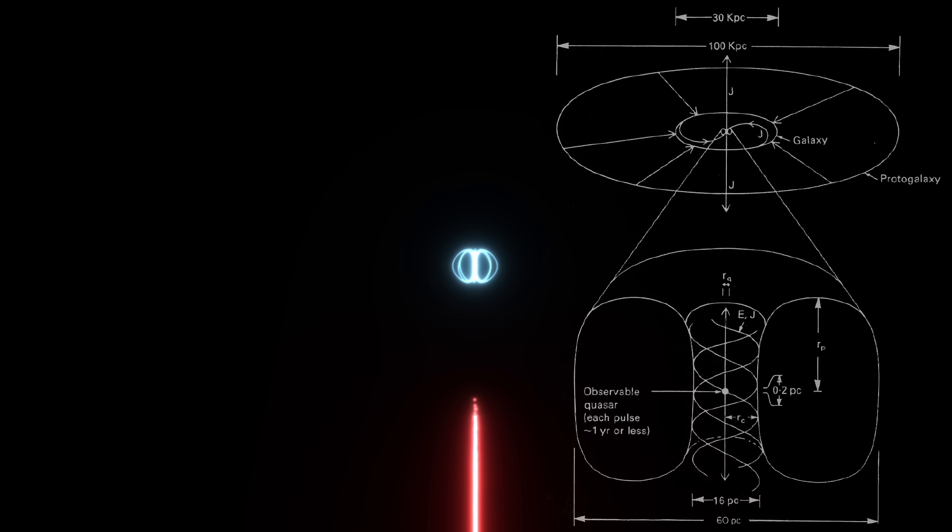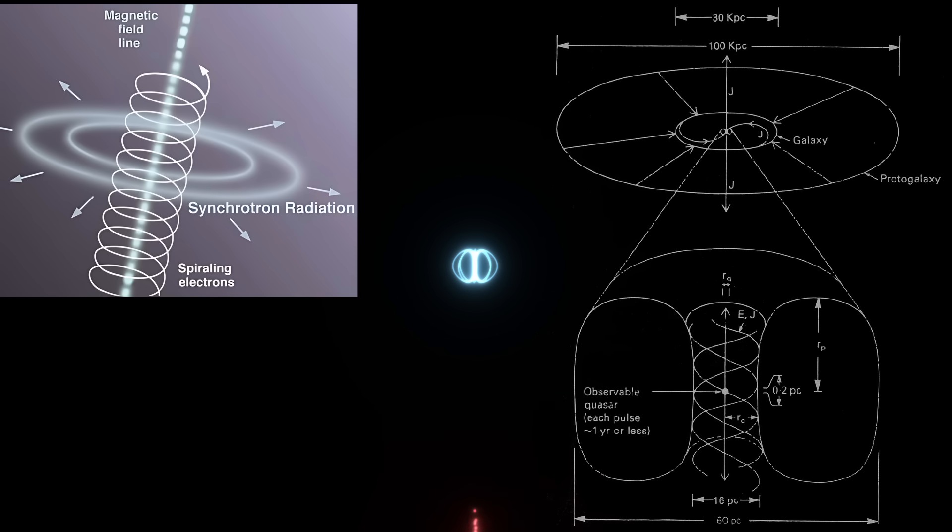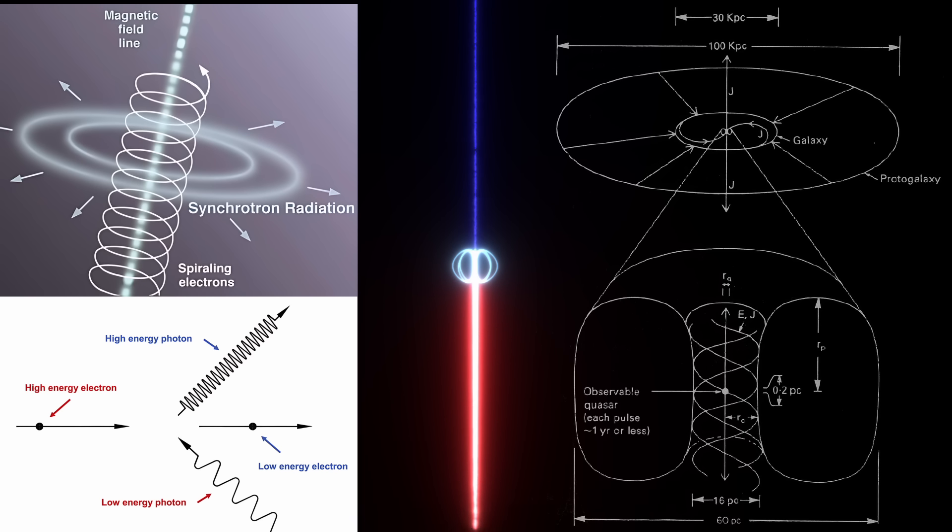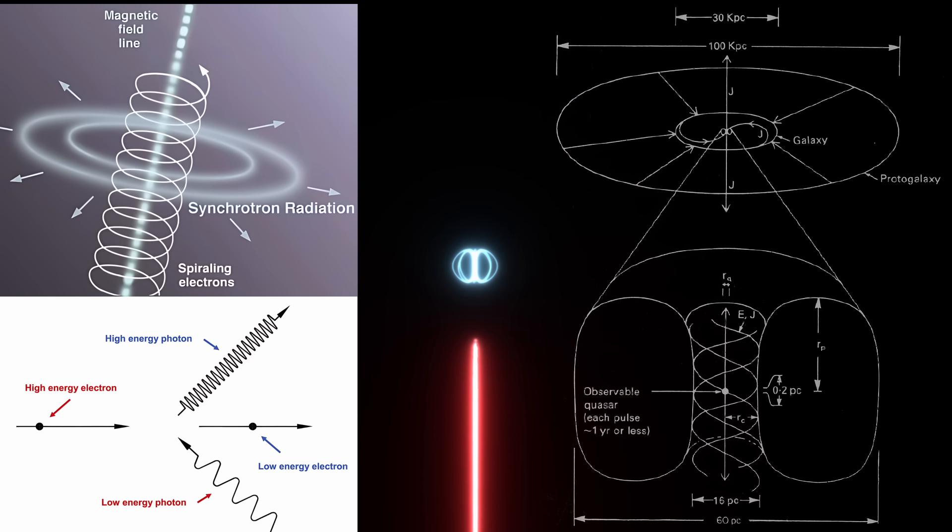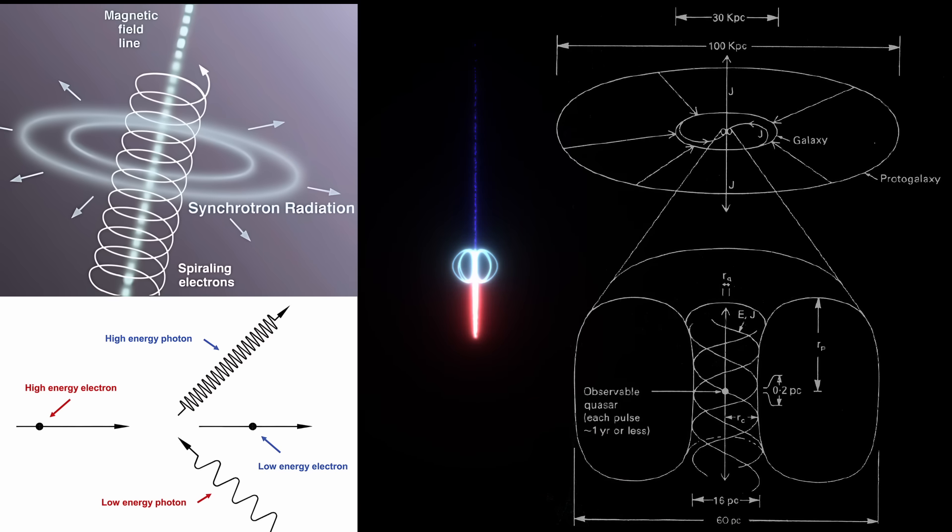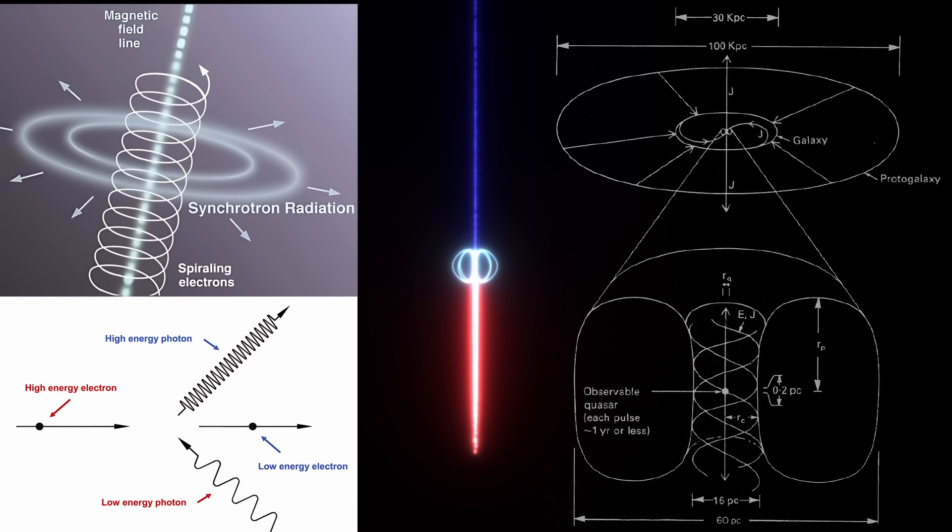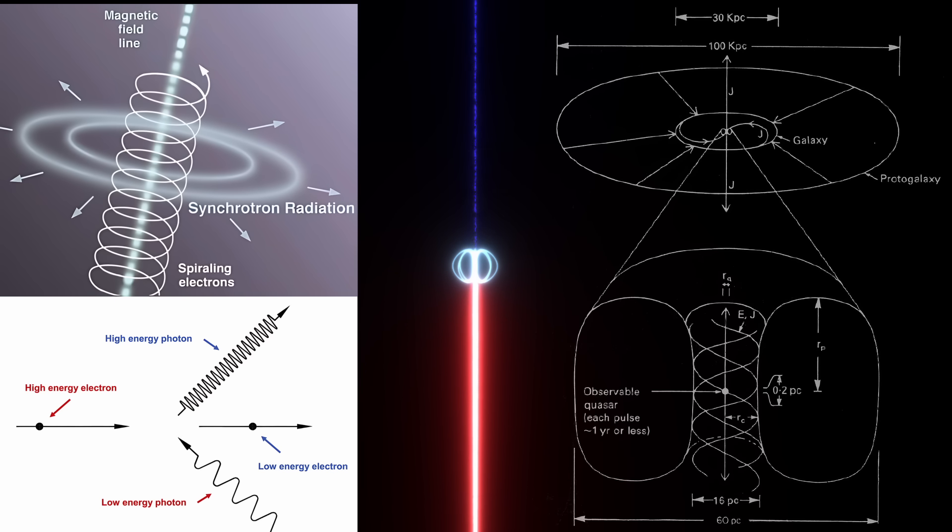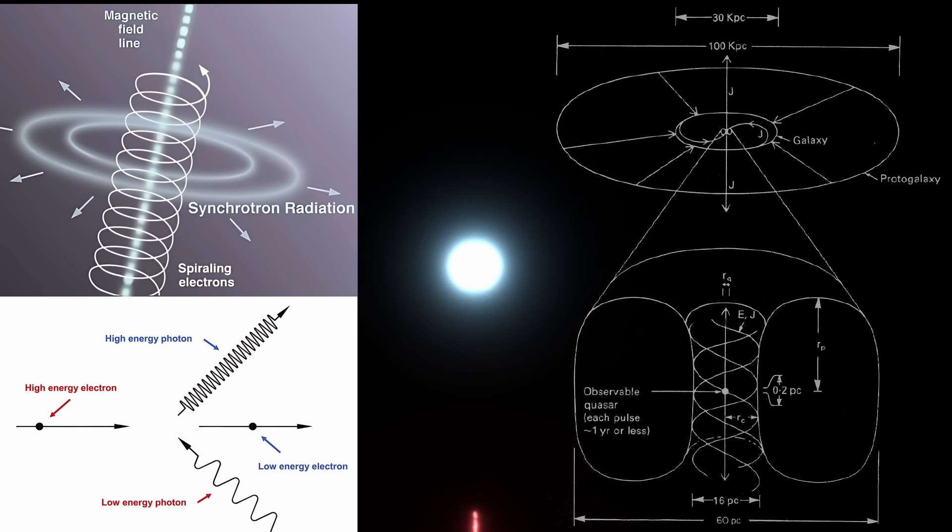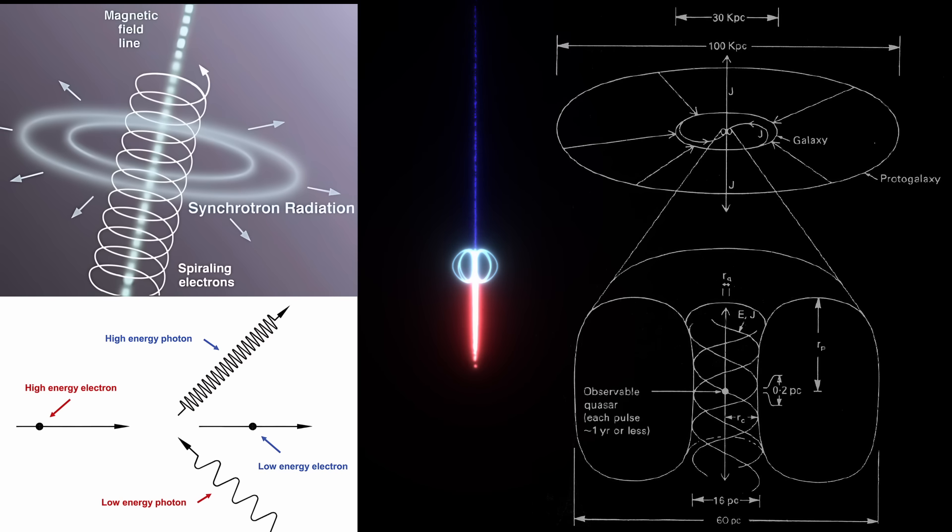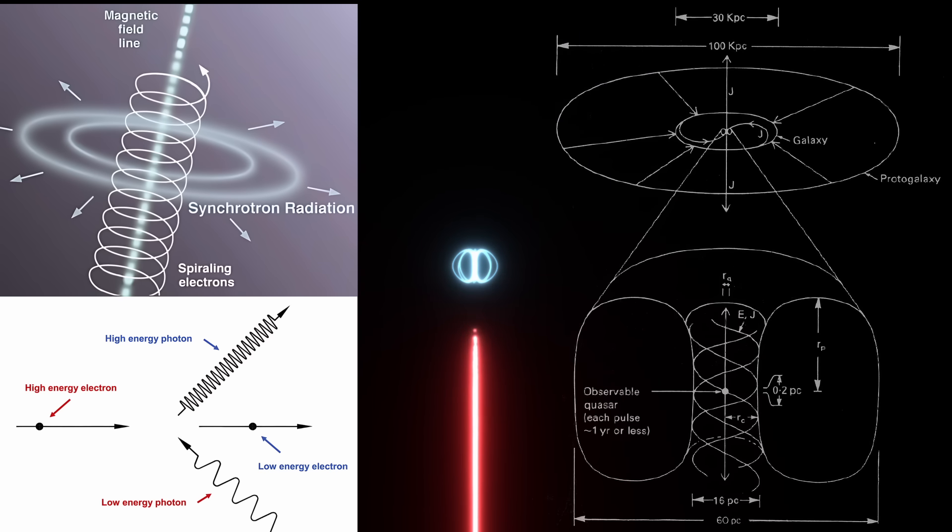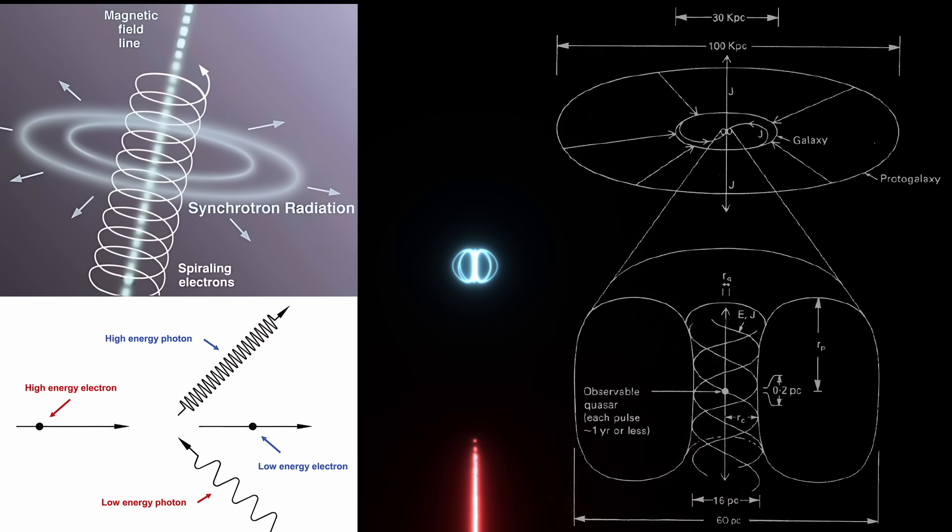Lerner's models suggest that plasmoids can emit radiation through processes such as synchrotron radiation and inverse Compton scattering, which are common in jets of AGNs. The flatter spectrum observed during the flare could potentially be explained by these emission mechanisms operating within a plasmoid. For instance, synchrotron radiation from relativistic particles in the plasmoid could lead to a spectrum that remains relatively flat across a wide range of frequencies depending on the magnetic field strength and particle energies. The rapid onset and decline of flares as well as the changes in spectral index could be attributed to dynamic processes within the plasmoid, such as changes in particle acceleration or magnetic field configuration.